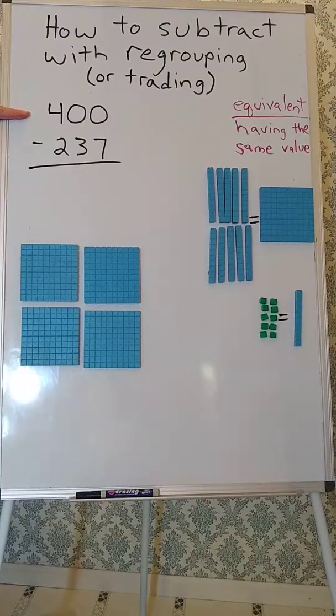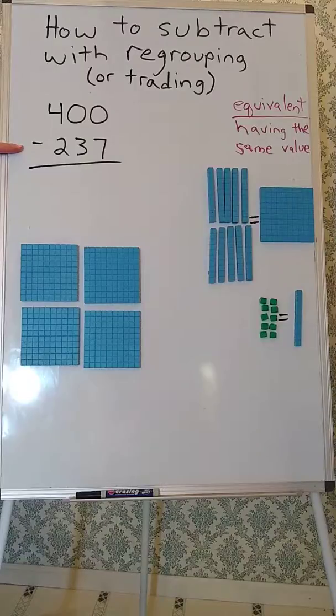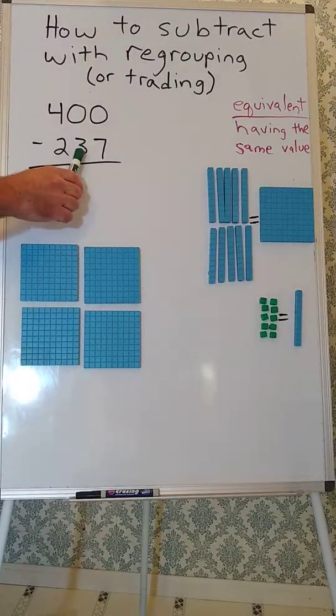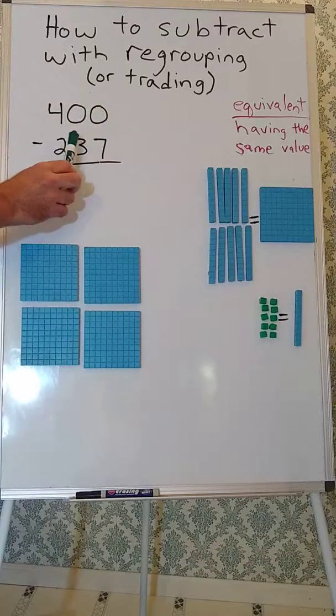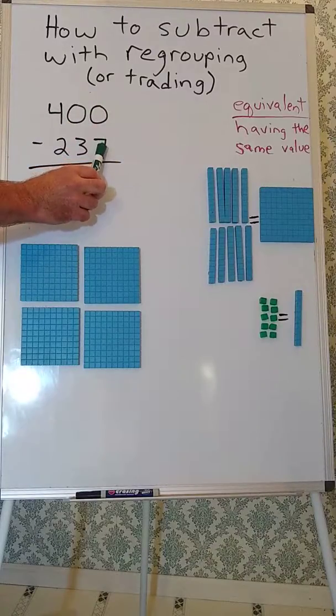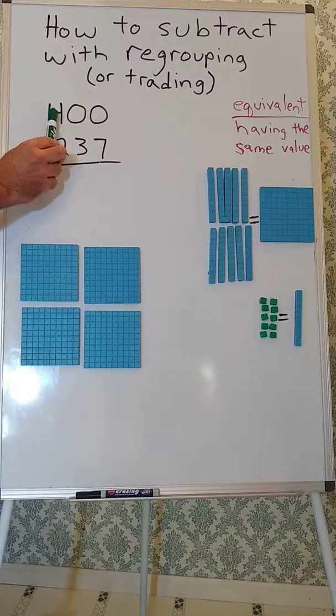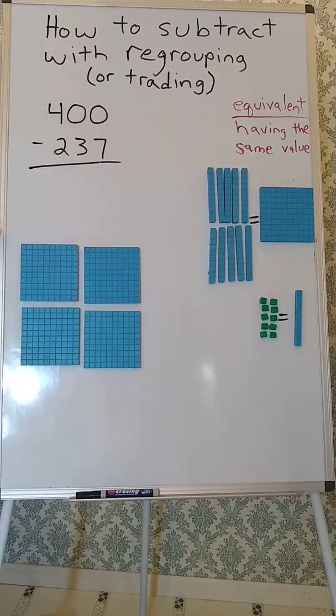This problem we're looking at is 400 minus 237, or we're taking 237 away from 400. We're taking 200s, 3 tens, and 7 ones away from 400s, 0 tens, and 0 ones.